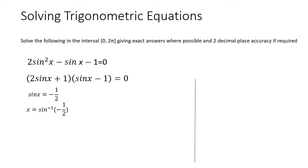That means x is equal to the inverse sine of minus one half. Now, I don't want you to go to the calculator and put in the minus one half with the inverse function — put in positive one half. Whenever you get sine to the minus 1, or cosine or anything else to the minus 1, always put in the positive value. Regard the answer you get as the deviation from the x-axis.